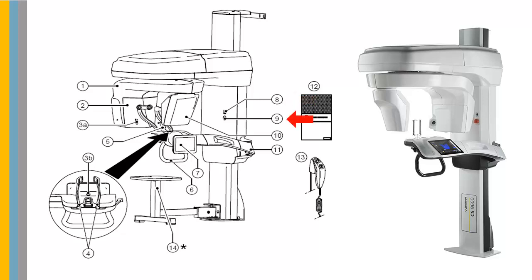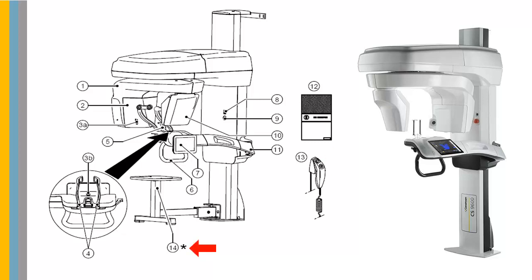Additional components include the Touchscreen Control Panel On-Off Button, Emergency Stop Knob, Panoramic 3D Digital Sensor, Unit Fixed Arm, CS9600 Computer Workstation, X-Ray Remote Control, and the Stool, which is optional.